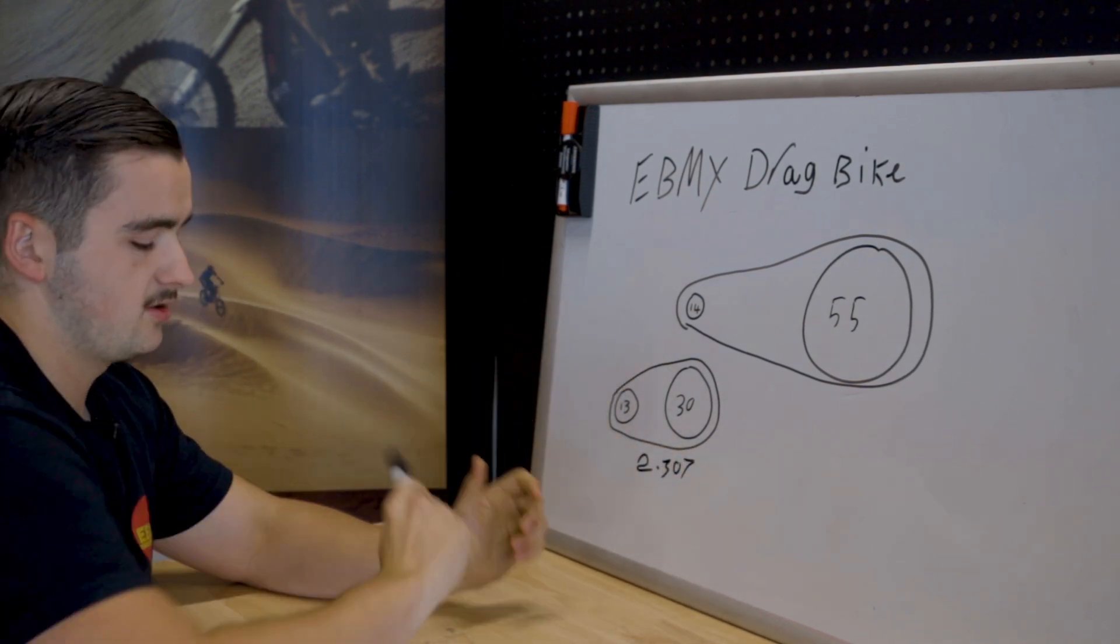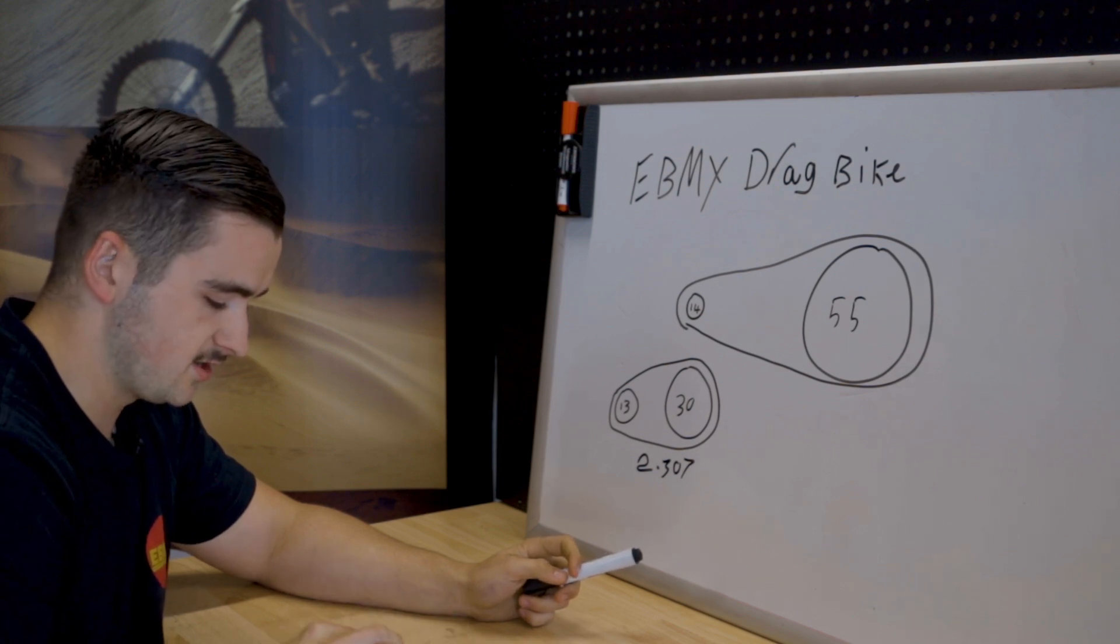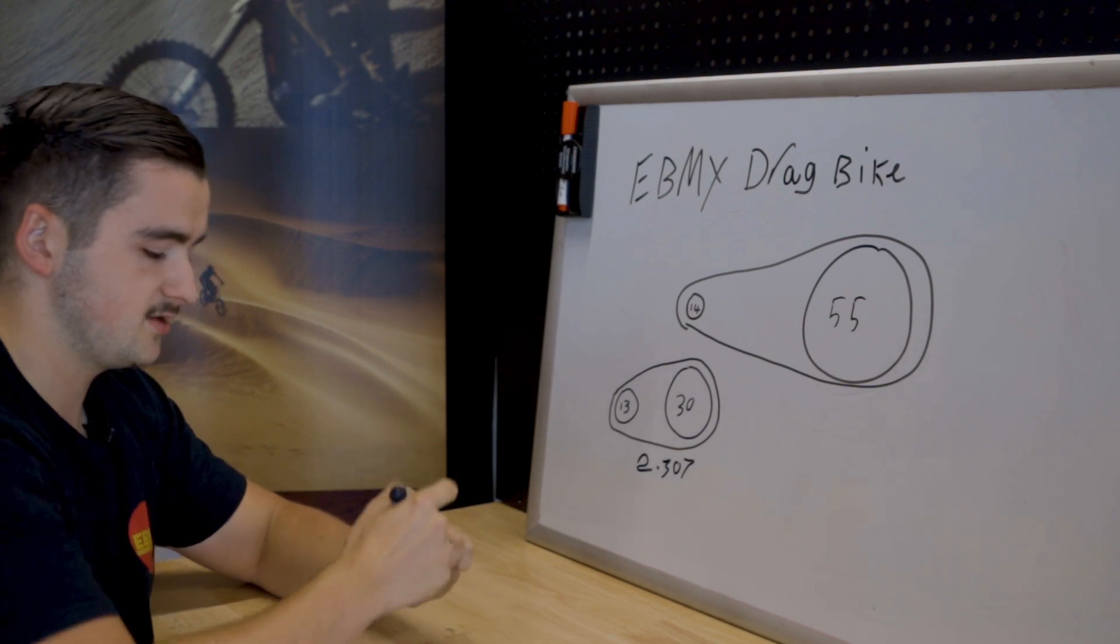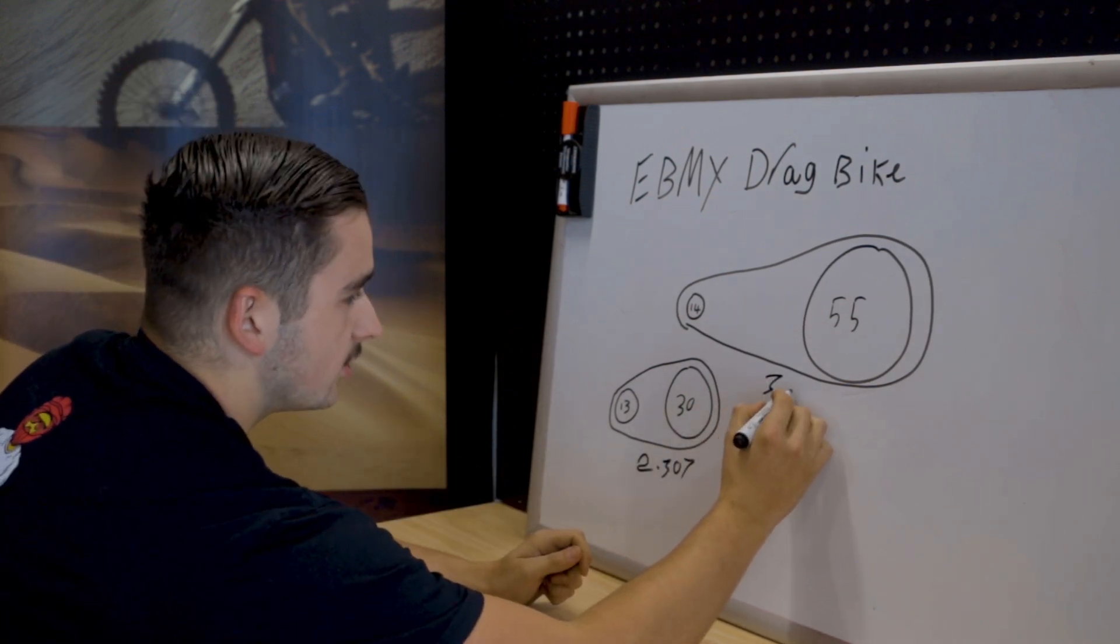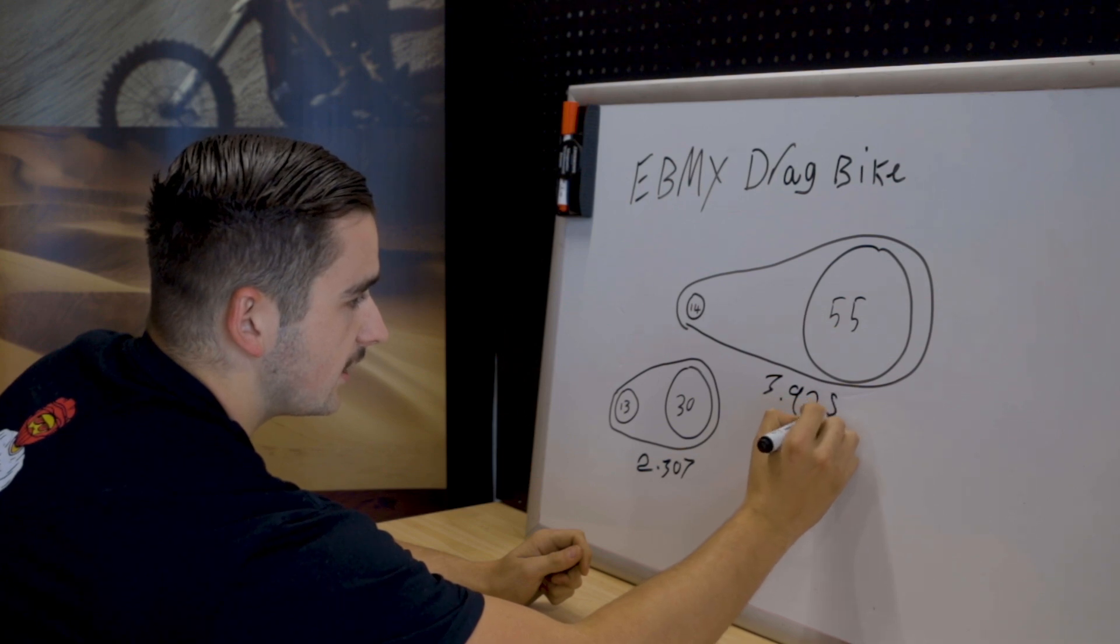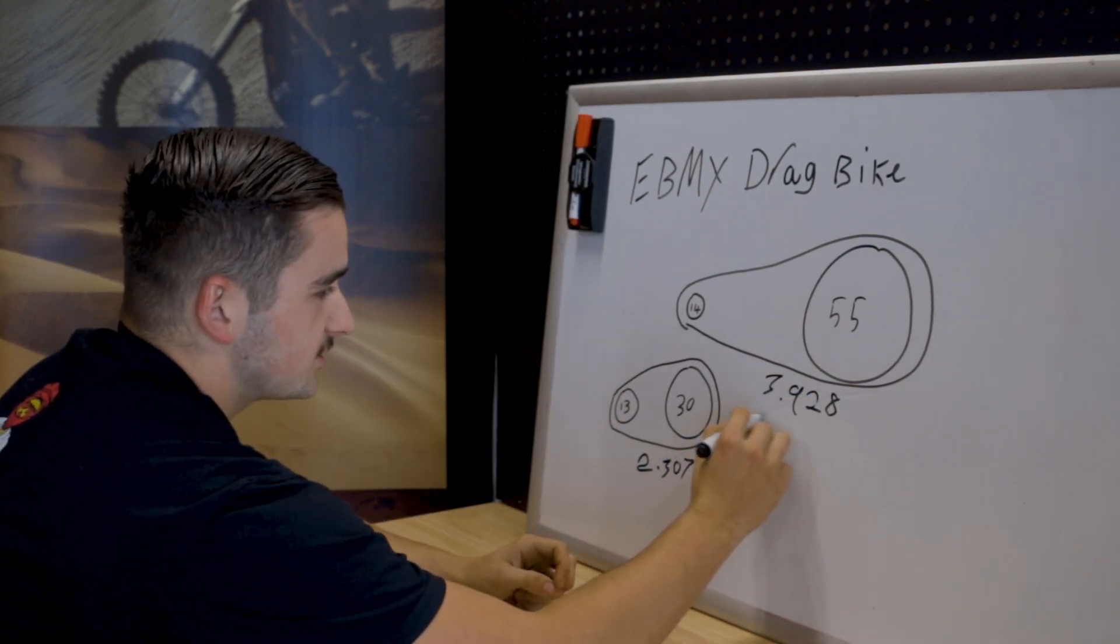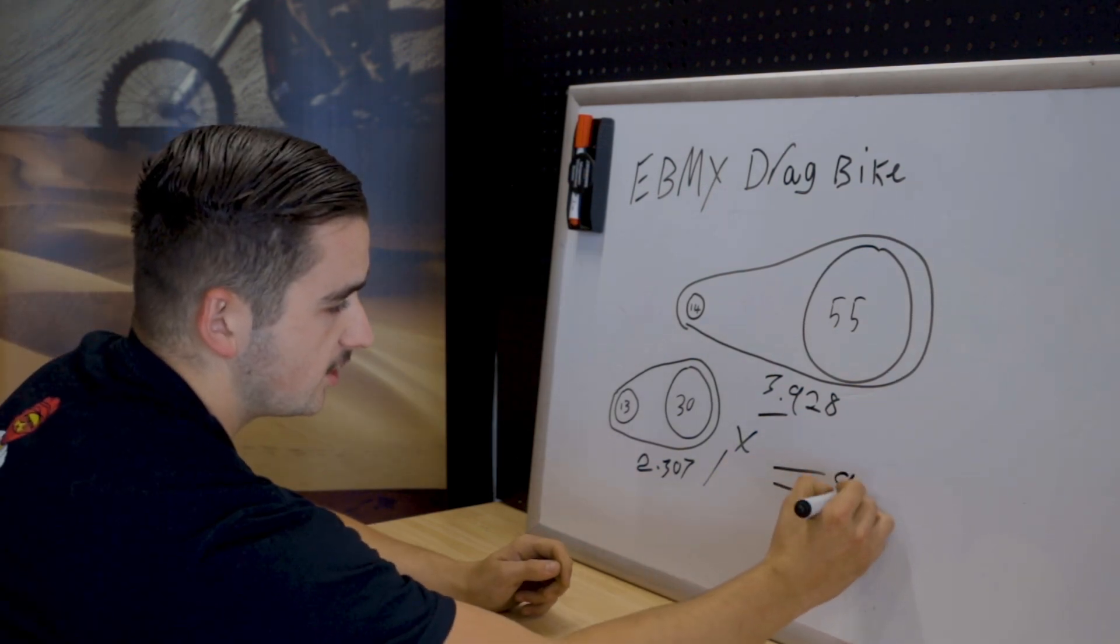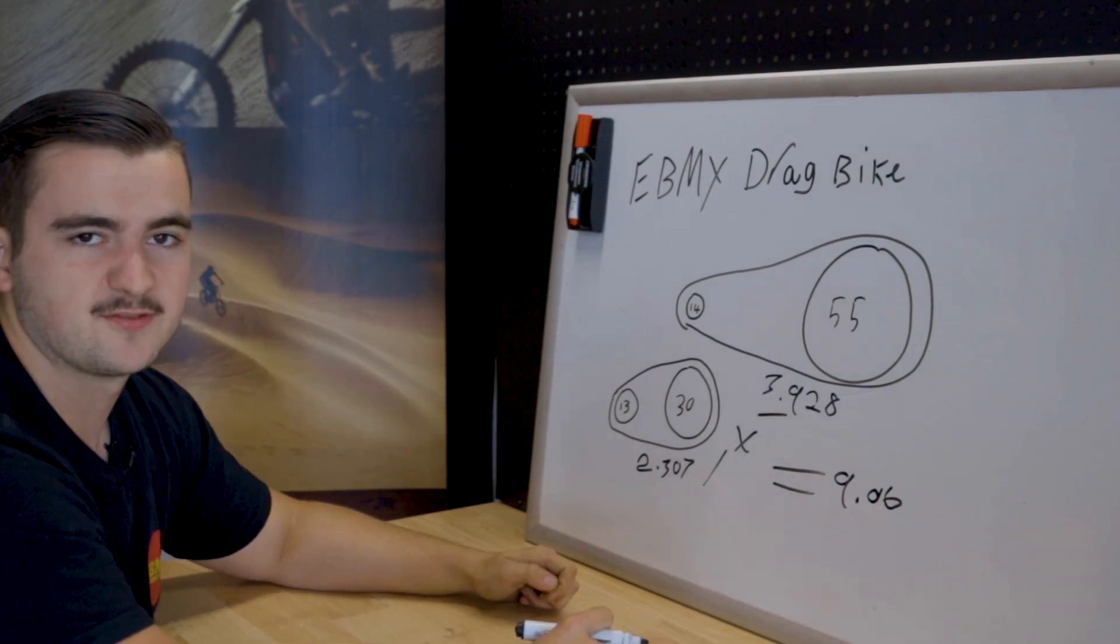Then our secondary drive, if we go 55 divided by 14 gives us 3.928. Then to figure out our final drive we times these two together which will give us a final drive of 9.06. That's our final drive.